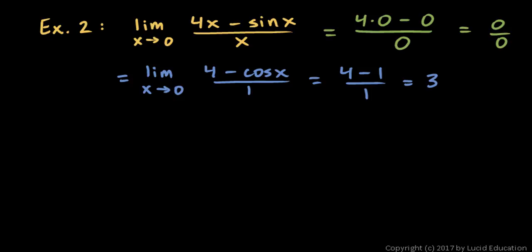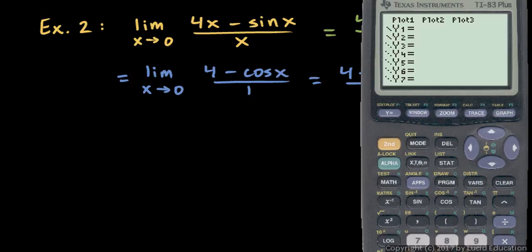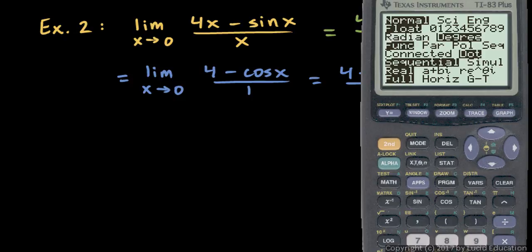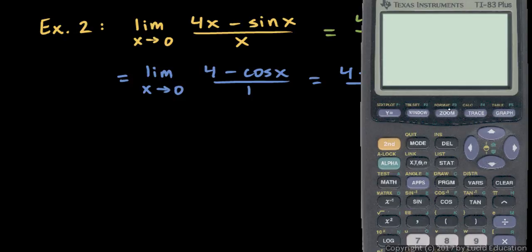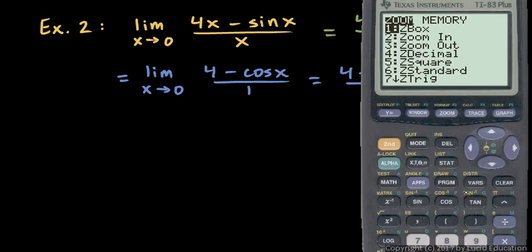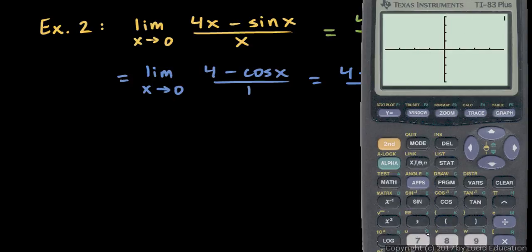Before leaving this problem, let's verify it on a calculator by graphing the original function. In the calculator, enter (4x minus sine(x)) over x — you need those parentheses. Make sure you're in radian mode, then go to the standard zoom setting and then zoom trig, option 7, to zoom in a bit.